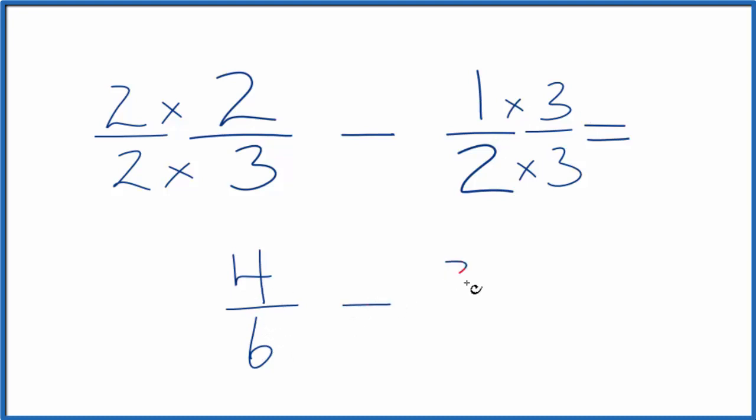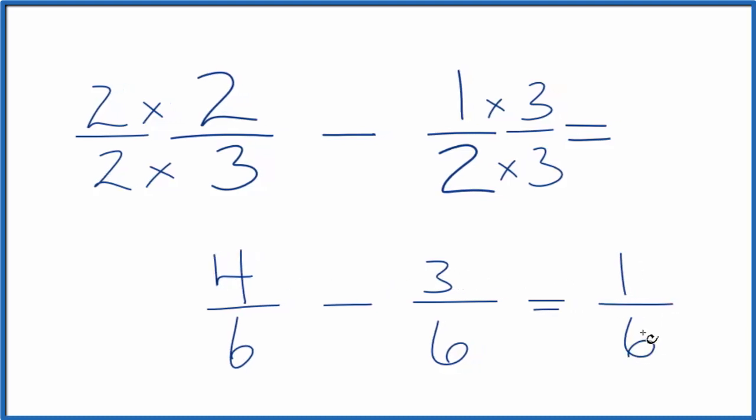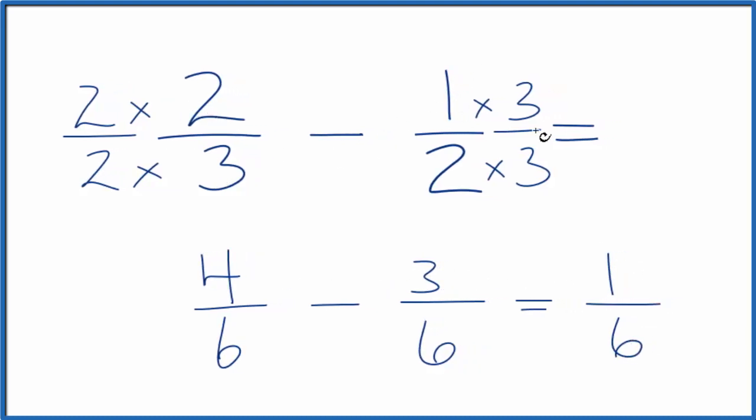Minus 1 times 3 is 3, 2 times 3 is 6, we have the same denominator. So we're just going to subtract the numerator. 4 minus 3 is 1 over 6. So two-thirds minus one-half is one-sixth.